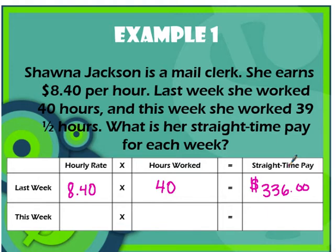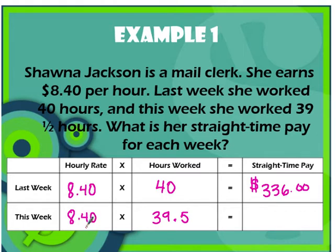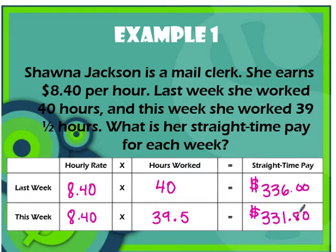That $336 means she's not incurring any overtime or extra pay for her work. This week she only worked 39 and a half hours. Her hourly rate stays the same at $8.40, but this time she worked 39.5 hours. After multiplying that out, her total straight time pay is $331.80. You can see the difference: working that extra half hour, she earns an additional $4.20.